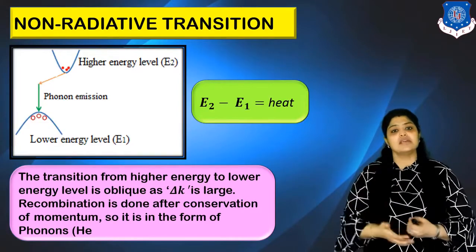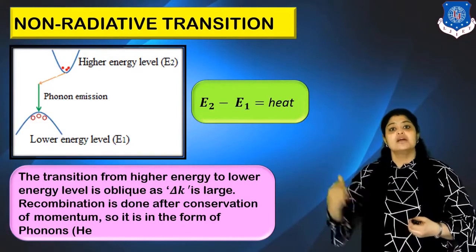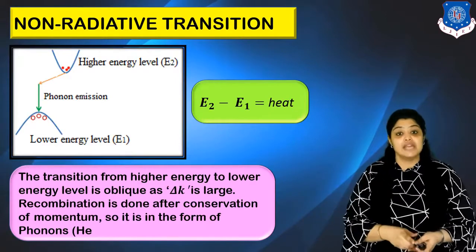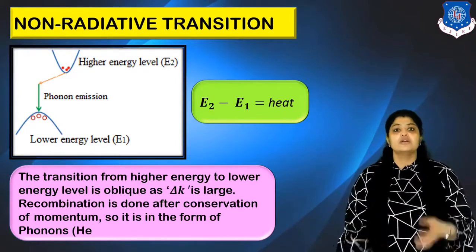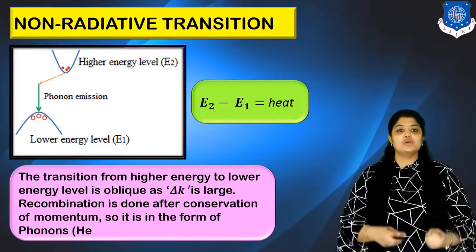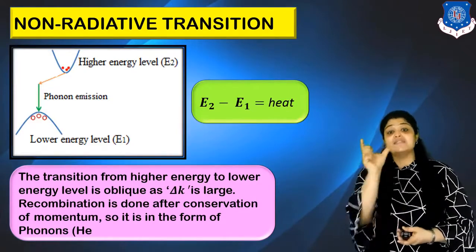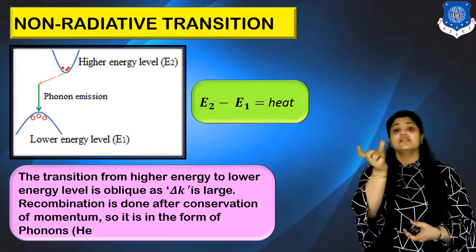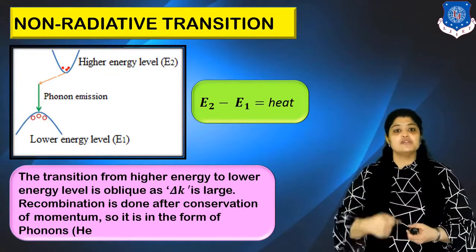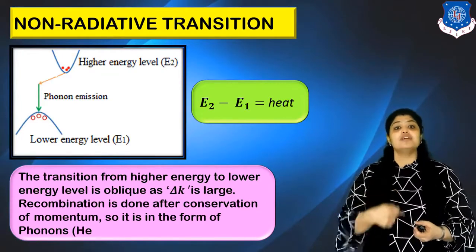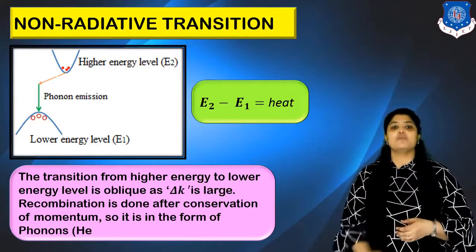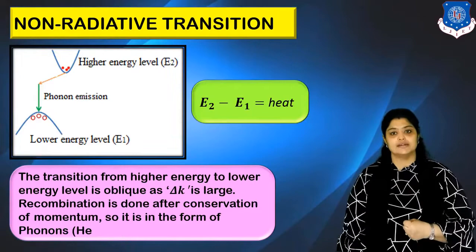Phonons represent vibrations giving heat. Here E2 − E1 energy is liberated in the form of heat and not as a photon. The transition from higher to lower energy level is oblique because the momentum difference ΔK is large. Recombination can only be achieved after momentum is conserved, and so the energy difference is released as heat.